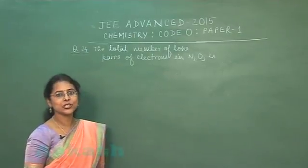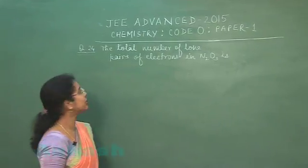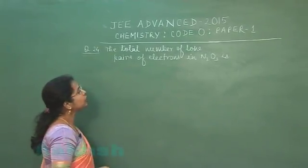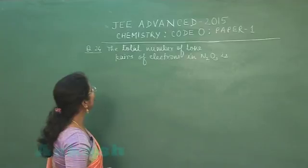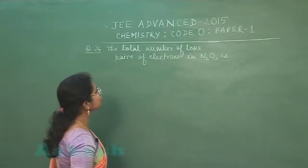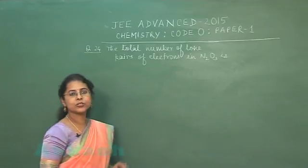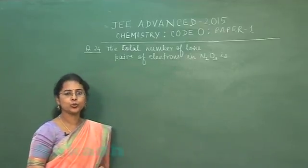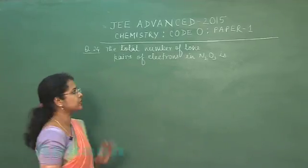Moving to question number 24: the total number of lone pairs of electrons in N2O3 is?